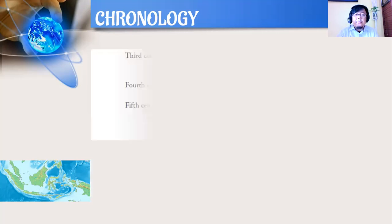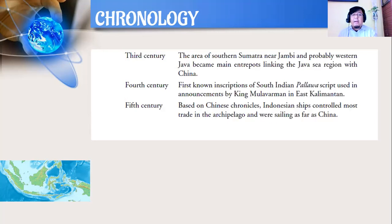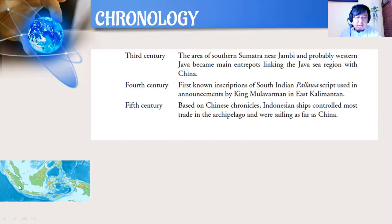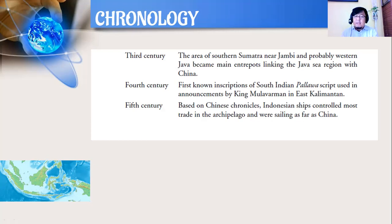Third century AD: the area of southern Sumatra near Jambi, and probably western Java, became the main entrepôt linking the Java Sea region with China. Jadi jangan heran kalau di Jambi dan di beberapa area di Palembang ada orang-orang yang keturunan Jawa. Fourth century: the first known inscription of South Indian Pallava script was used in an announcement by King Mulawarman in East Kalimantan.